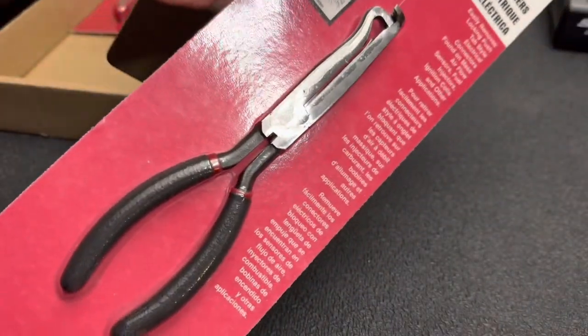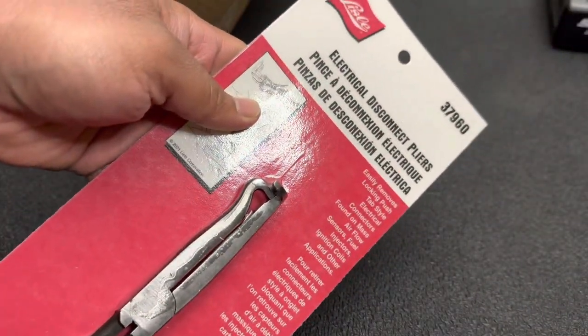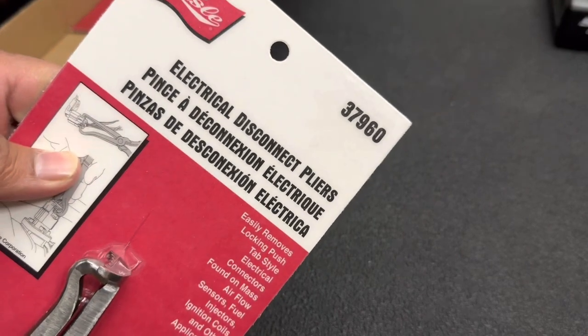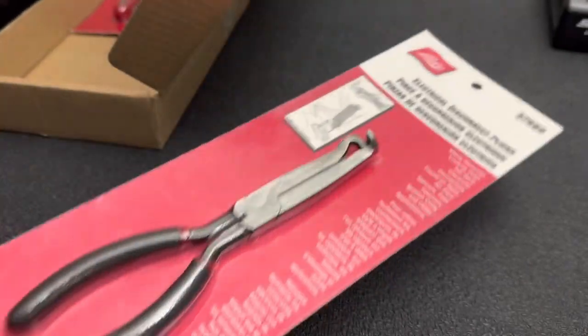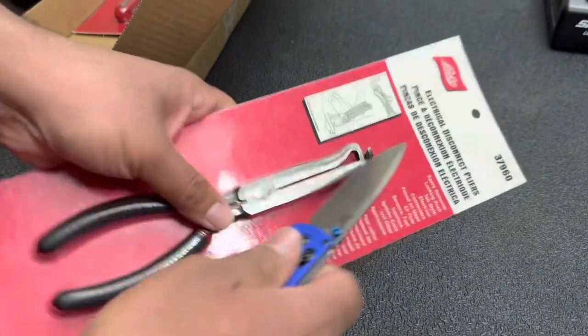Alright guys, so the first item that we got in the box is the new Lyle Electrical Disconnect Pliers. It's going to be your part number right there, 37960. Let me go ahead and grab a knife and we'll get this thing opened up here.